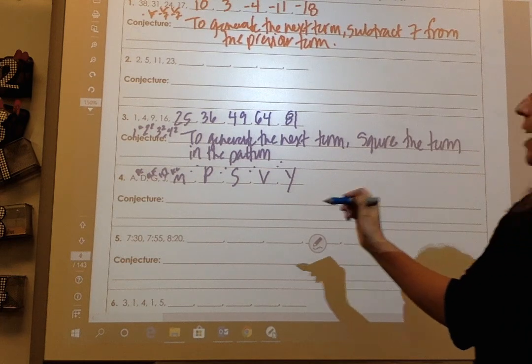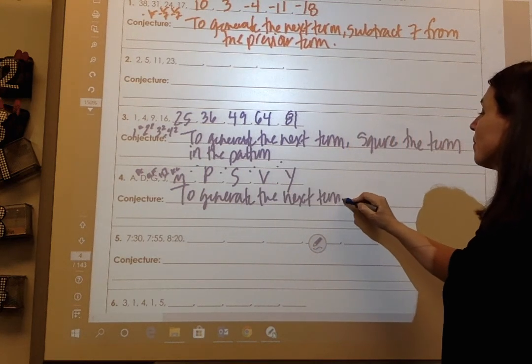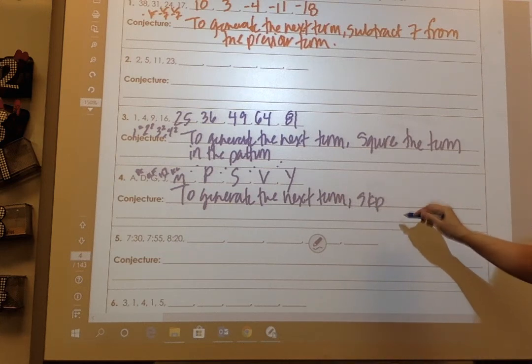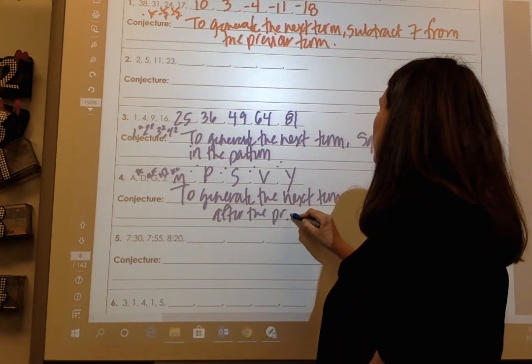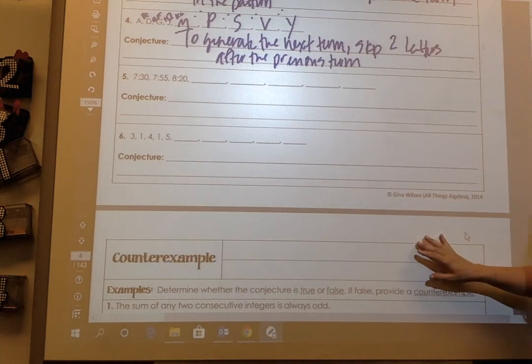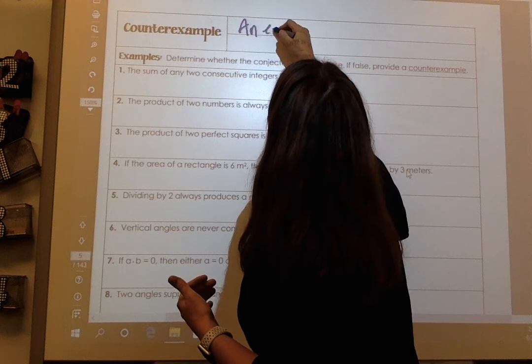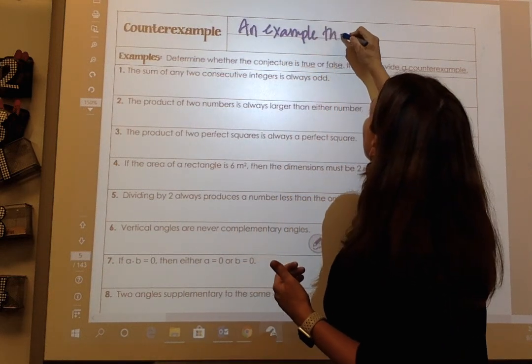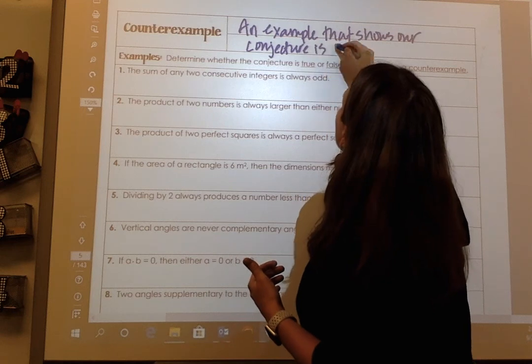And my conjecture is going to say to generate the next term, skip two letters after the previous term. So you can go through there and figure out the patterns, and that's how we make our conjecture. Let's talk about another big word that we need here. This is called a counterexample. A counterexample is an example that shows a conjecture is false.